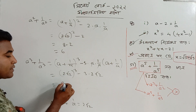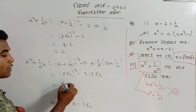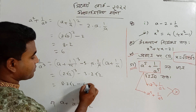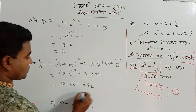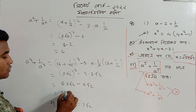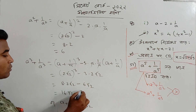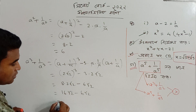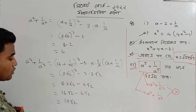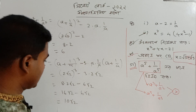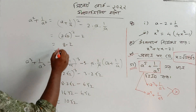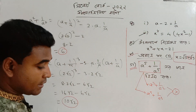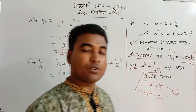We get 2 cubed minus 8, and root 2 cubed equals 2√2. Then: 8 times 16 times root 2 minus 6 root 2 gives 10√2. So a squared plus 1 by a squared equals 6, and a cubed plus 1 by a cubed equals 10√2.